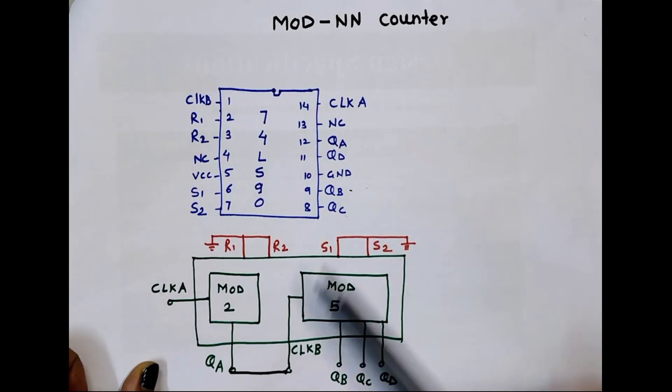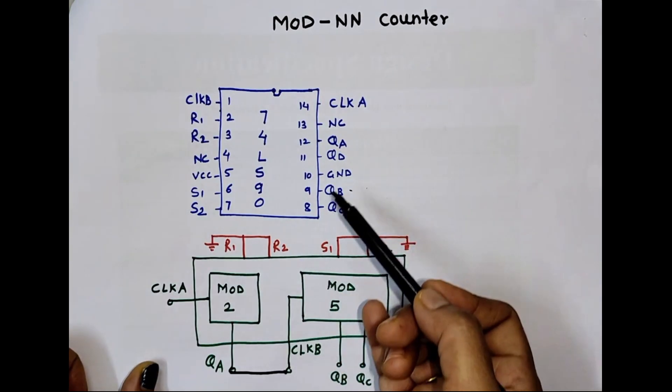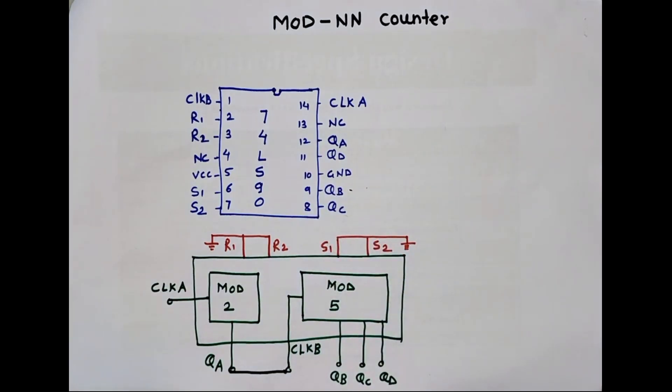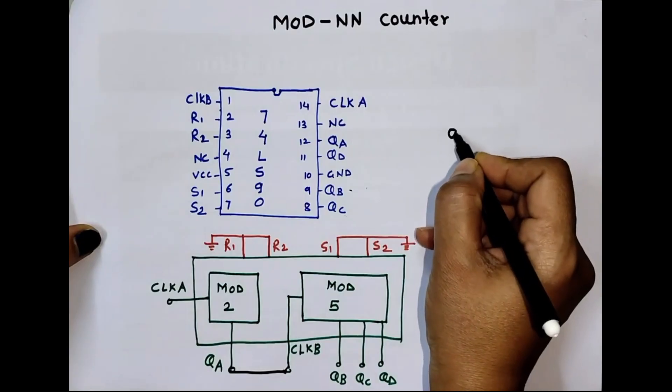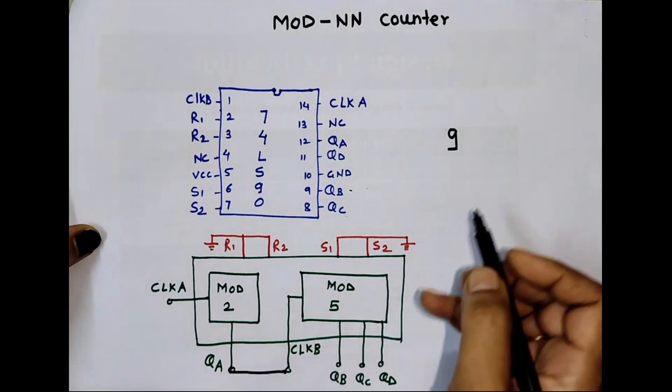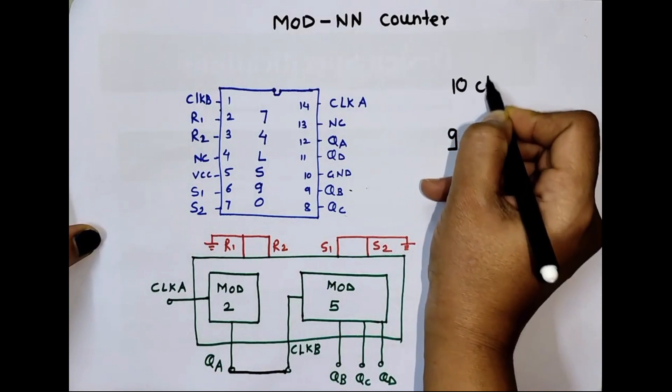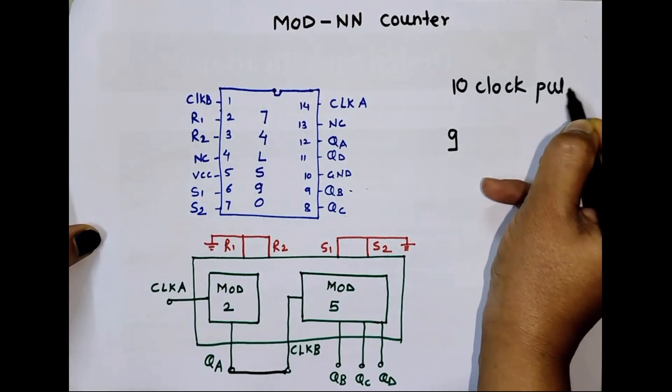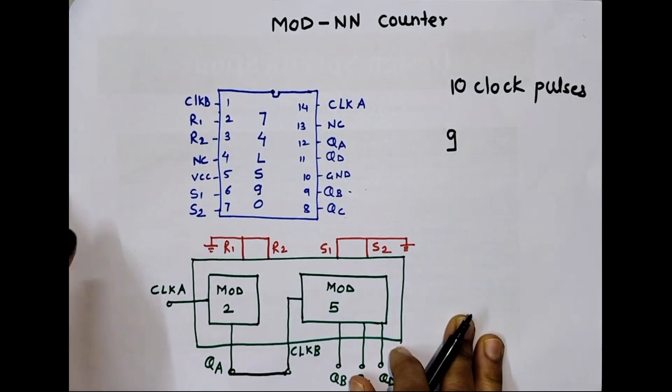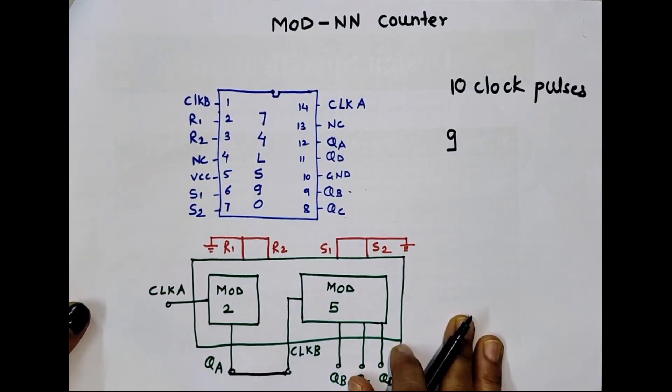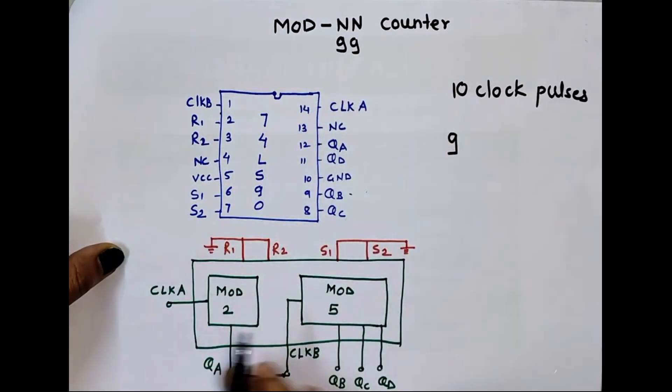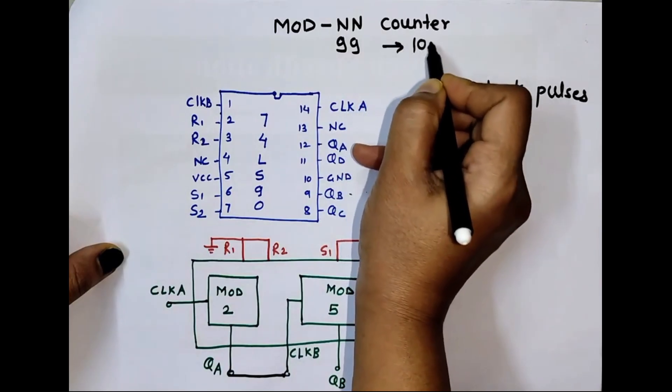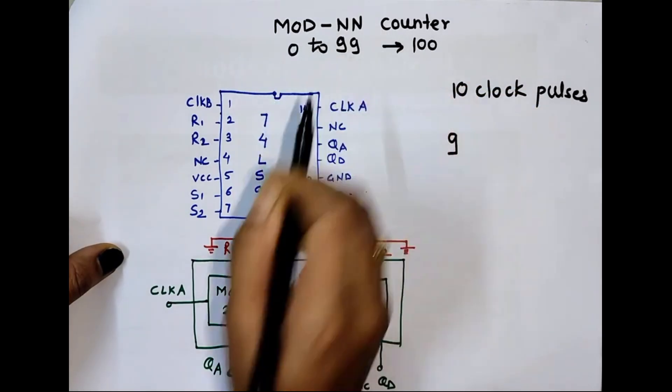QA, QB, QC, and QD are outputs. Here pin number 13 is not connected and pin number 10 is ground. So here maximum, we can, this is BCD counter, so maximum we can count up to 9 or maximum it can count 10 clock pulses. So I'll show you implementation of MOD-NN counter. MOD-NN means maximum it will display count 99, so it can count 100 clock pulses, 0 to 99.